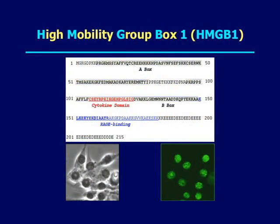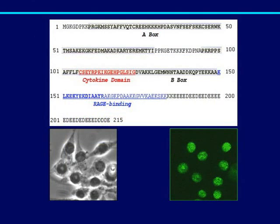HMGB1 stands for High Mobility Group Box 1 Protein. It's one of the proteins that actually reside normally in the nucleus of cells. Here I show the example of macrophage cell staining — if you stain cells with HMGB1-specific antibodies, you only find HMGB1 in the nucleus. As a nuclear protein, it has two DNA binding domains, and its normal functions involve binding DNA and regulation of gene expression and transcription.